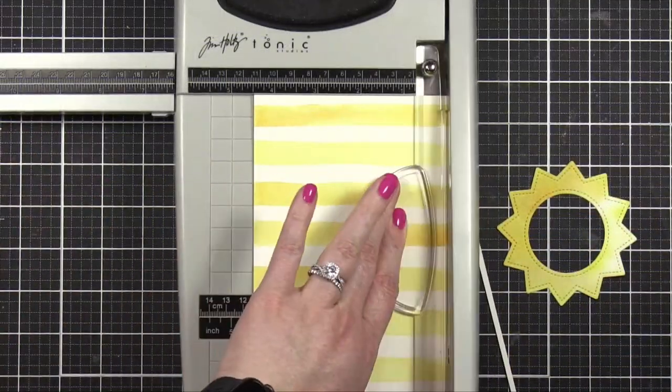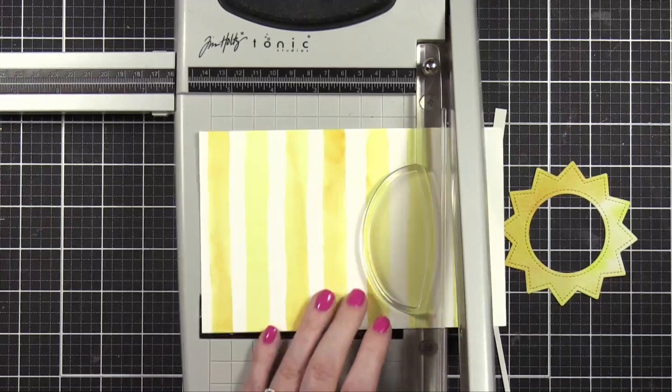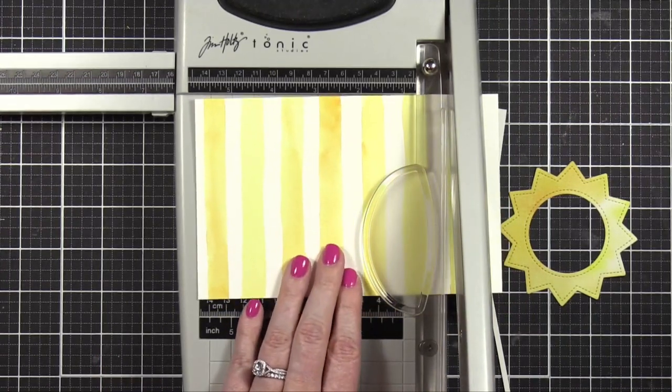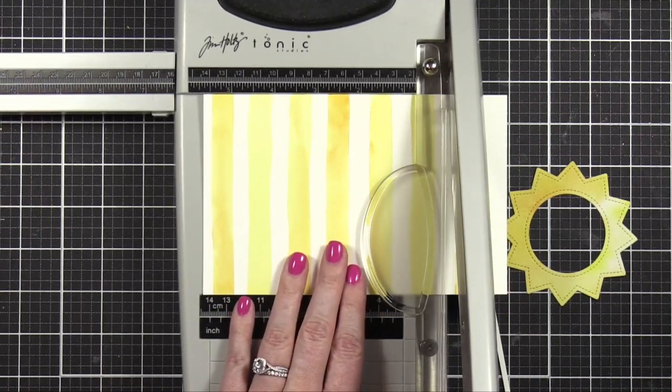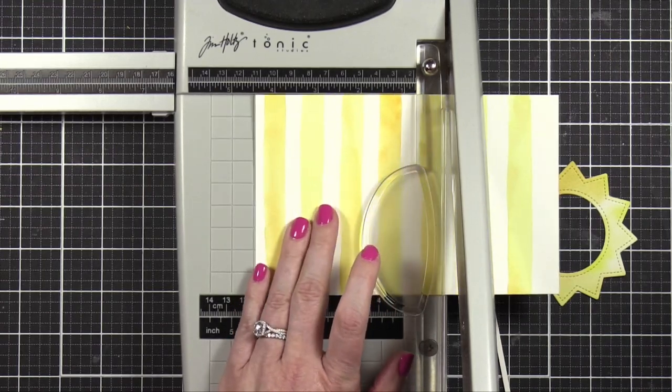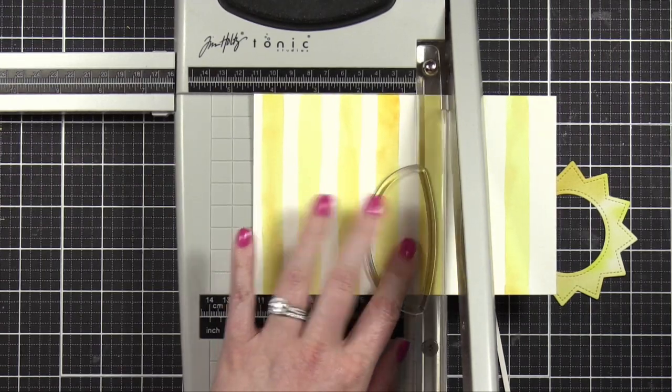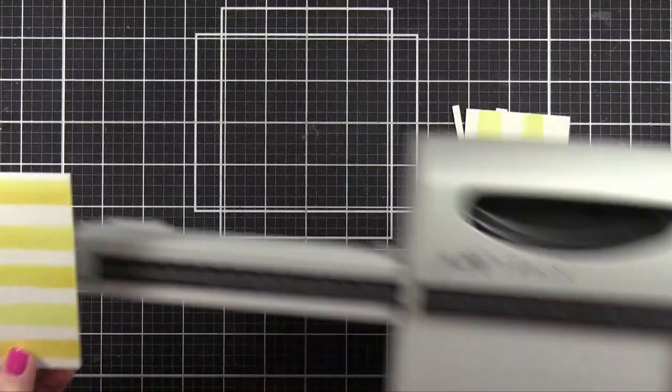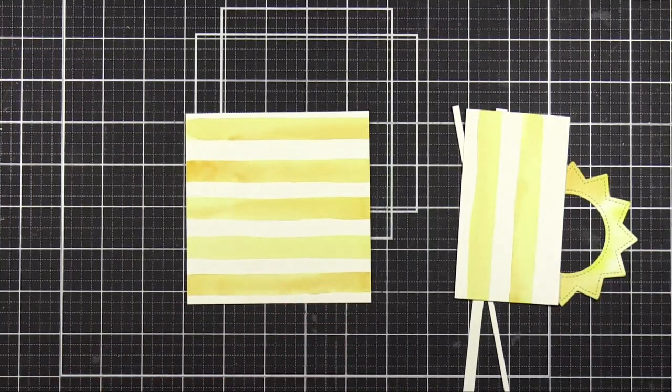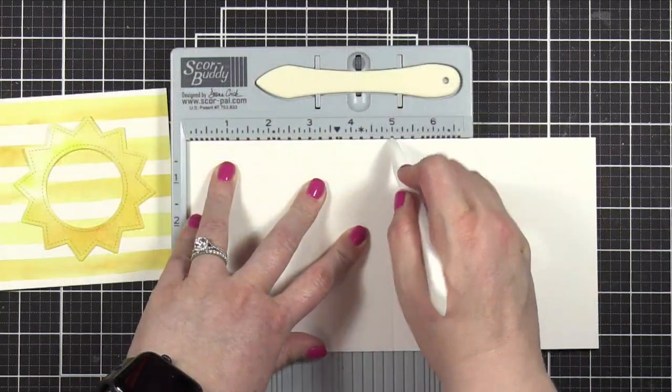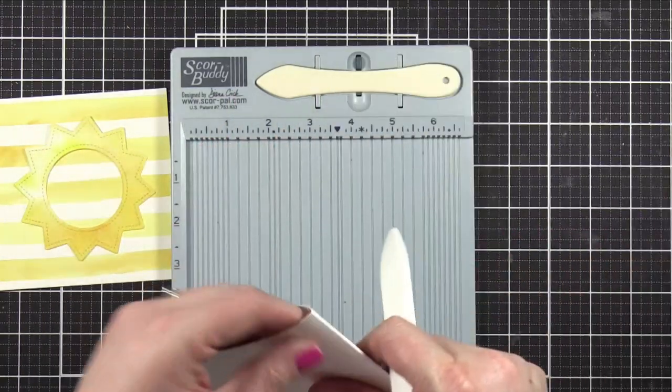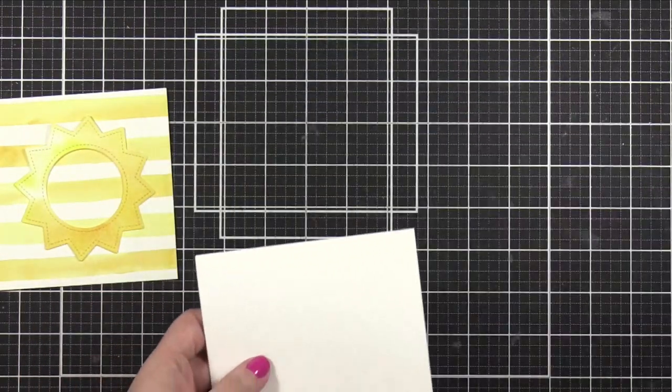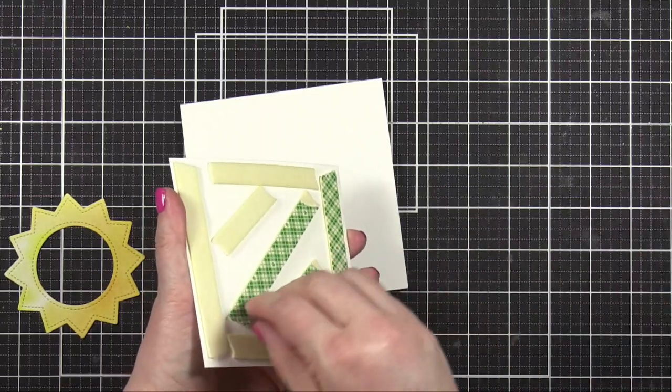In the meantime, I'm going to cut down my striped watercolor paper so that it is four and a half by four and a half. I'm going to be creating a five by five square card today, so this is going to be just a little bit smaller than my finished size card. Creating my card base out of some Neenah Classic Crest Solar White card stock, cut to five by 10, and then scored at five inches to create a top folding card.